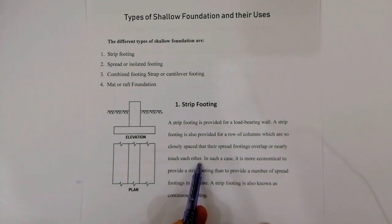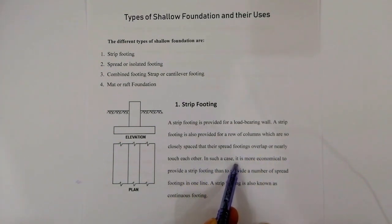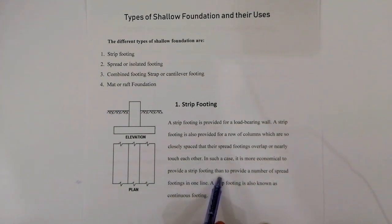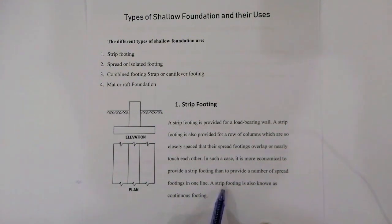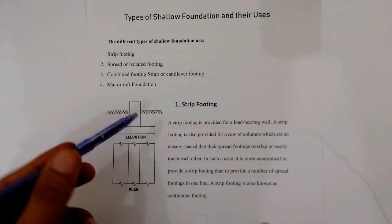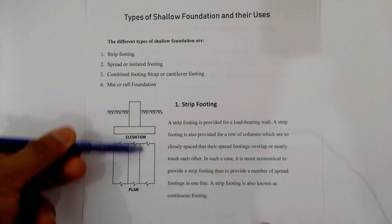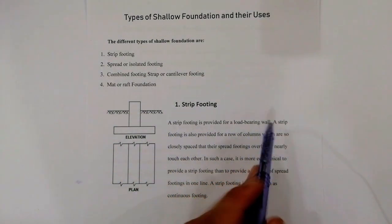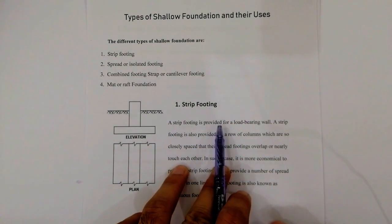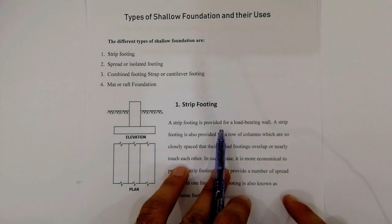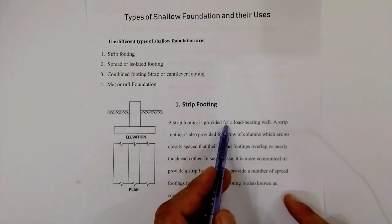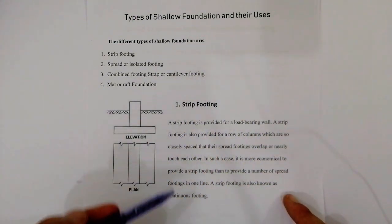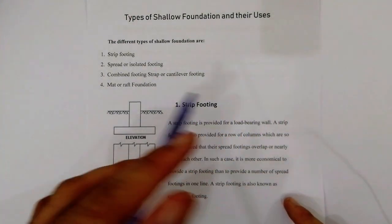In such a case, it is more economical to provide a strip footing than to provide a number of spread footings in one line. A strip footing is also known as continuous footing, because it runs continuously along the row — specially designed for load-bearing walls.